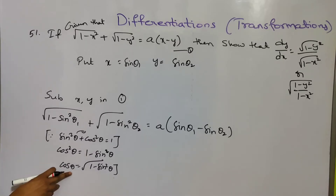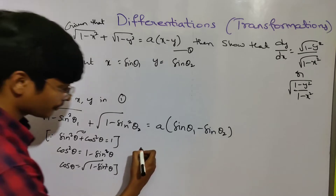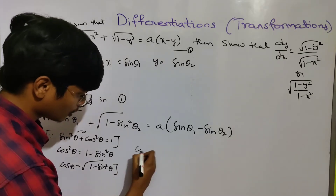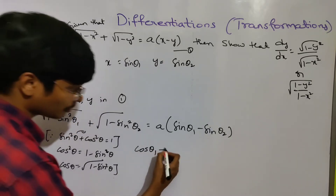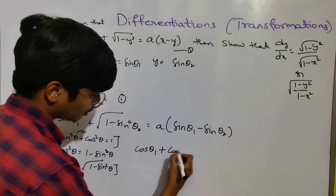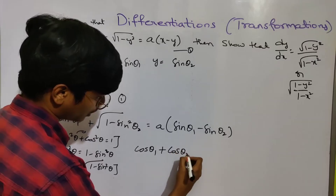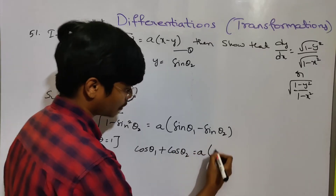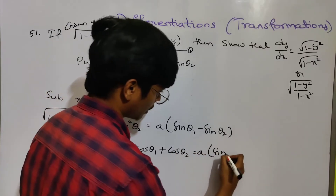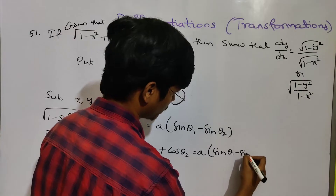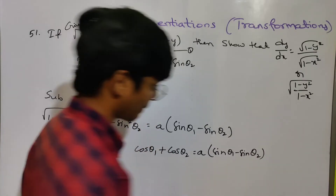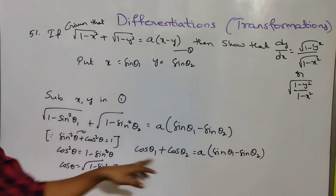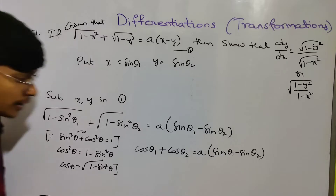So cos θ₁ + cos θ₂ = a(sin θ₁ - sin θ₂). This formula uses the same values on both sides.